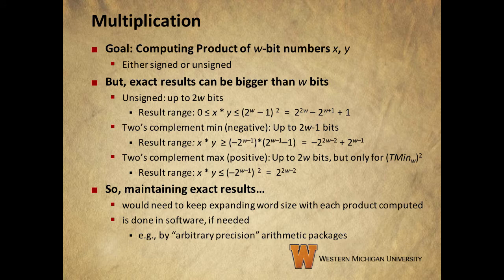Multiplication works very much the same way as addition, except we may end up truncating quite a few more bits when we're done. So to maintain exact results, we would need to keep expanding our word size every time we implement a multiplication. It is, of course, not practical to try to do that directly, but we can do that kind of thing in software if we need to. Many computer algebra systems, for example, such as Maple and Mathematica, support arbitrary precision calculations.